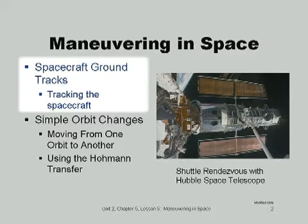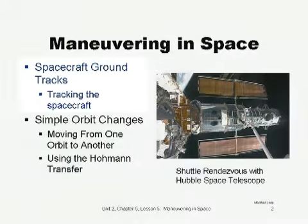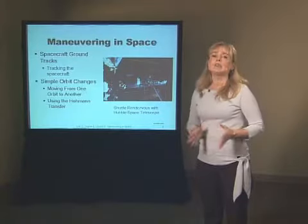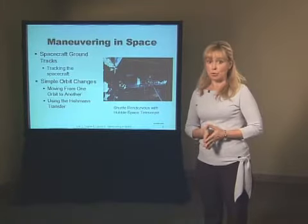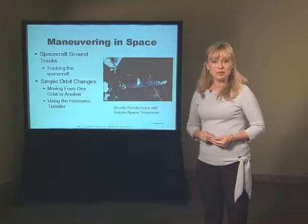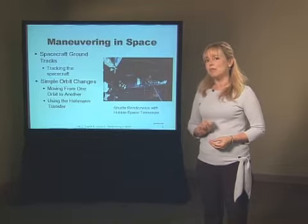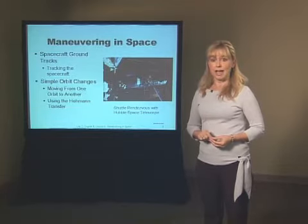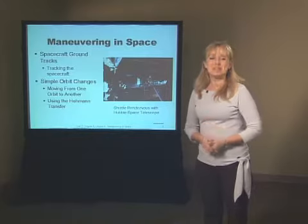We've learned how spacecraft move through space, but in order to accomplish the spacecraft's mission, we have to know where it's located and where it's going. Often, we need to know which part of Earth the spacecraft is over so we can take pictures or communicate. Our spacecraft is falling around in orbit at tremendous velocity, and our Earth is rotating on its axis once per day. So the question is, which part of Earth is the spacecraft flying over now? Today, we're going to figure this out.